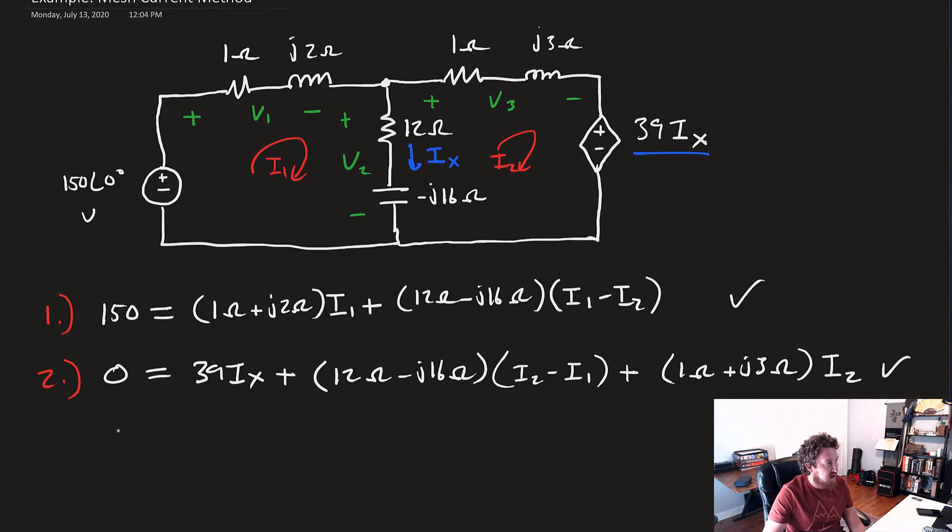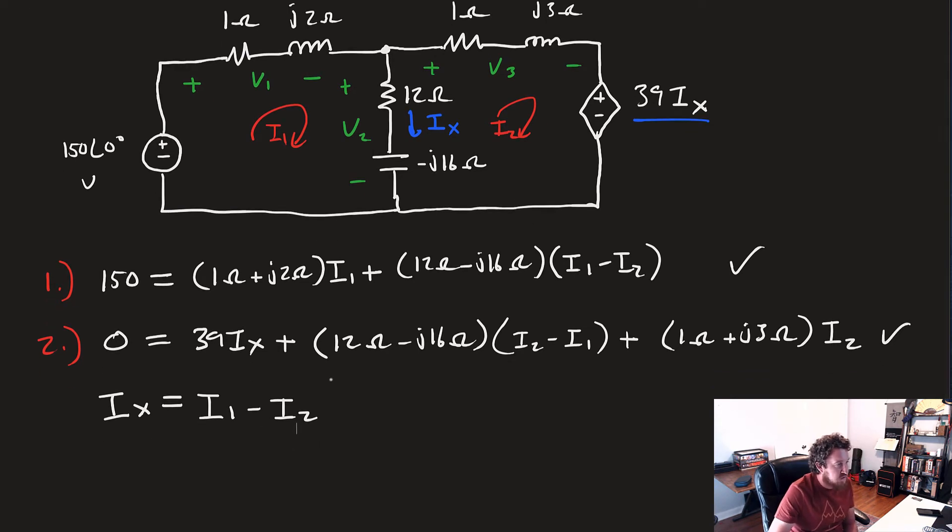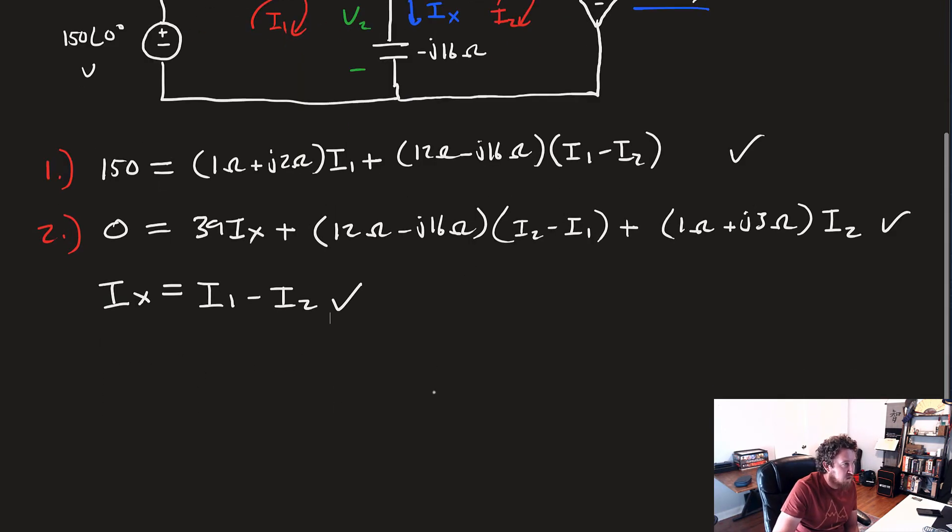And last but not least, we need to find Ix, since that's our third unknown, and that's actually just this line right here, so that's going to be equal to I1 minus I2. So, there we go. Just like before, use whatever your favorite method for solving system of equations is to get your answers. We don't take the time to work them out by hand here, because that would take forever, but you're going to get some results.